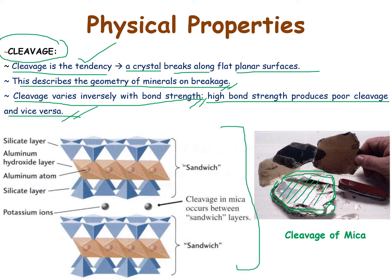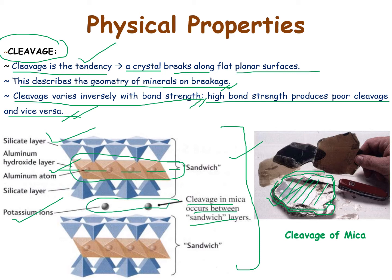Here is an example of the mica crystal. We can see that a silicate layer is on top, then an aluminium hydroxide layer is in between with aluminium atoms inside it, and then again there is a silicate layer — a sandwich layer between these two silicate layers. If we cut from the middle of this sandwich layer, we see a particular type of cleavage. This is how cleavage in mica occurs between the sandwich layers, with potassium atoms also present between them.